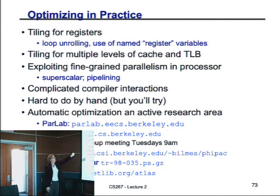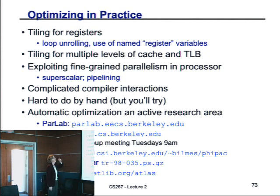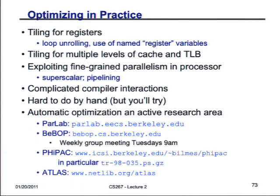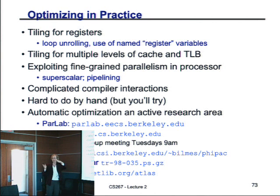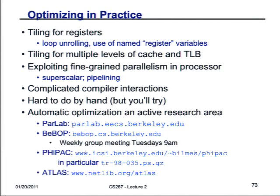You might want to tile for multiple levels — cache, even the TLB, which you can think of as another cache level and just another level of nested loop. If you have a really big matrix, you might want to exploit fine-grained parallelism from superscalar and pipelining by rearranging assignment statements to encourage the compiler to generate the best code. That was the original exercise someone did when they unrolled the inner loop and asked which order of assignment statements is fastest — just tried all possible combinations and ran each.